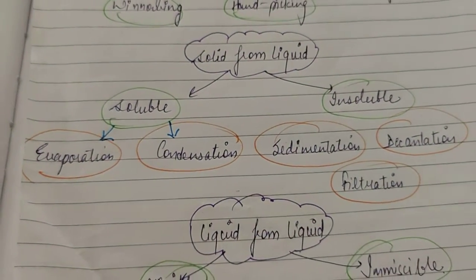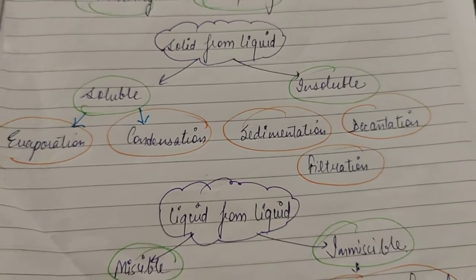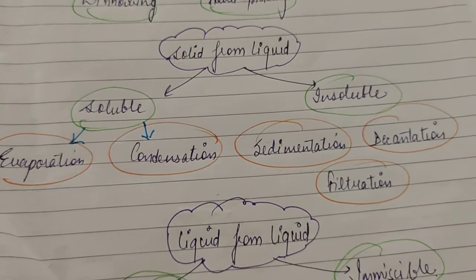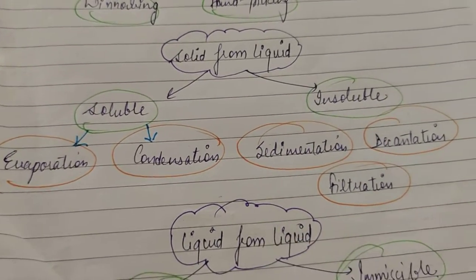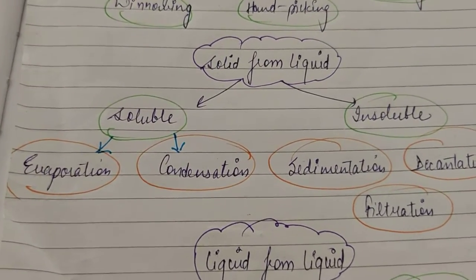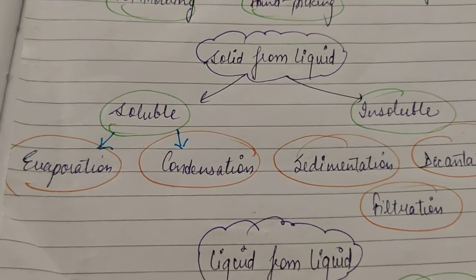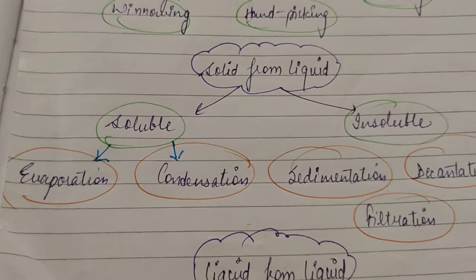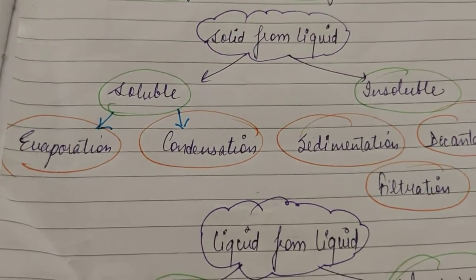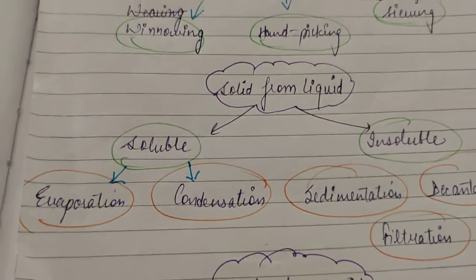In evaporation, the component of the solution which is able to evaporate, which can be evaporated, that is evaporated and the other component remains in the beaker only or in the utensil in which you have taken the mixture. Then condensation means the vapors which are formed are condensed and the another fraction is also collected. So you can collect the another fraction also, and the substance which cannot be evaporated will remain in the flask or in the container only.